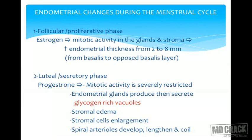In the follicular or proliferative phase, estrogen causes mitotic activity in the glands and stroma. The endometrium increases in thickness from 2 to 8 millimeters. On ultrasound, this is measured from the basalis of one uterine wall to the basalis of the other.